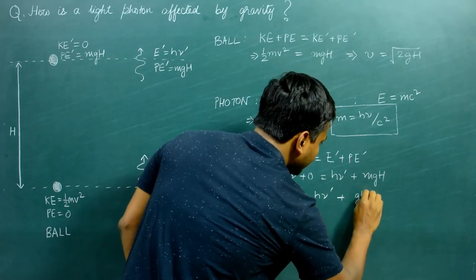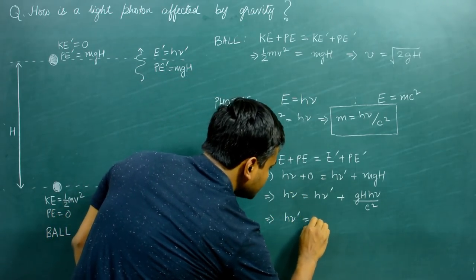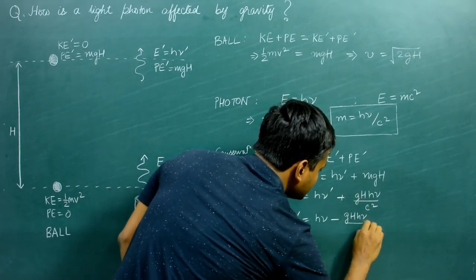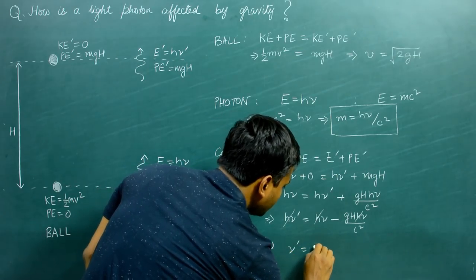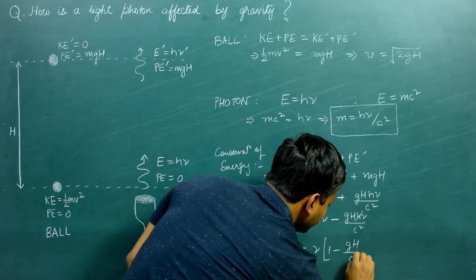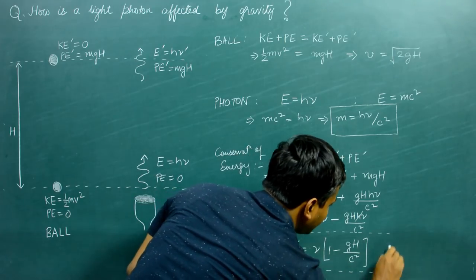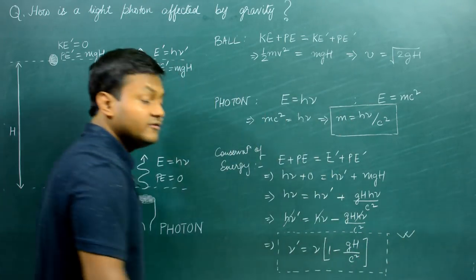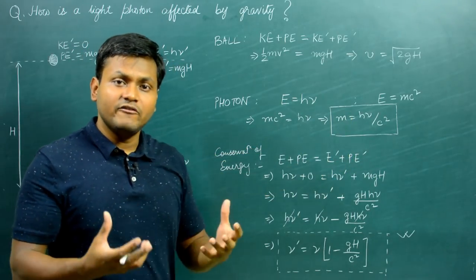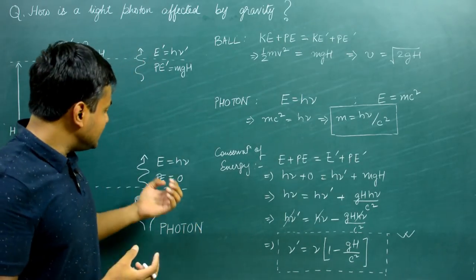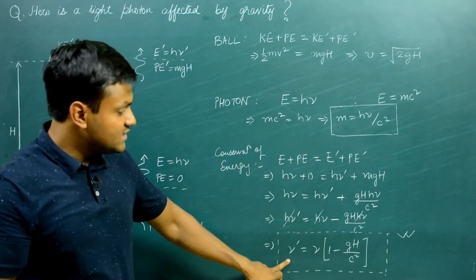Substituting m = hν/c², we get: hν = hν' + (hν/c²)·gH. Taking that term to the left-hand side and rearranging: hν' = hν − gH·(hν/c²). Cancelling h, we end up with: ν' = ν(1 − gH/c²). This is the new frequency of the light photon after it has traveled a distance H in the gravitational field where the acceleration due to gravity is g. The photon has a mass because of its energy, and this mass is affected by gravity — so as the photon moves upwards, it loses energy reflected not as a decrease in velocity but as a decrease in frequency.